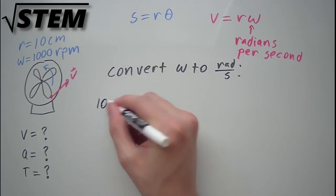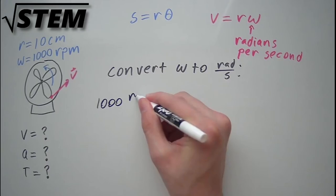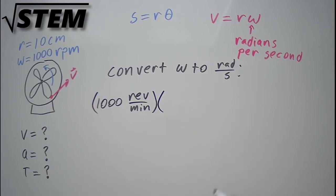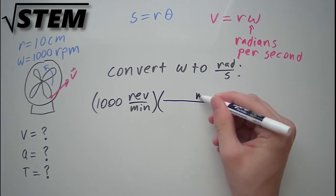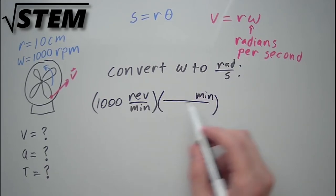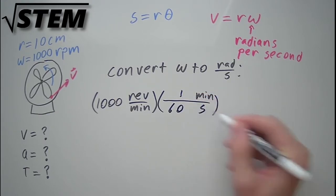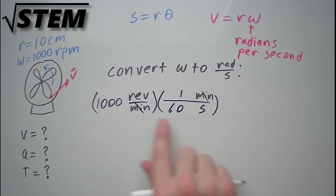Right now we have omega as 1,000 revolutions per minute. Now remember, these units work just like fractions. So if we multiply this by something with minutes on the top, that will cancel out our minutes on the bottom, and we know that in one minute there are 60 seconds. So if we did 1,000 divided by 60, we would have revolutions per second.